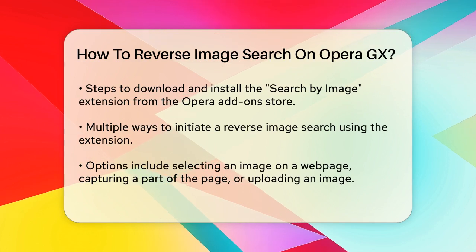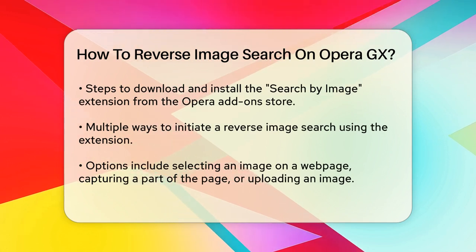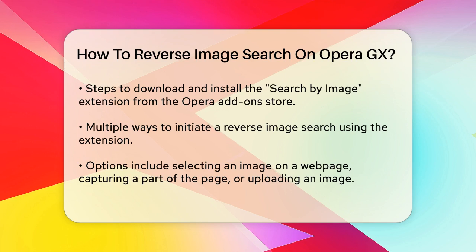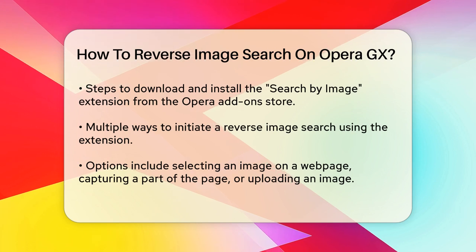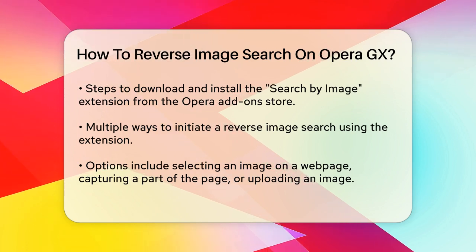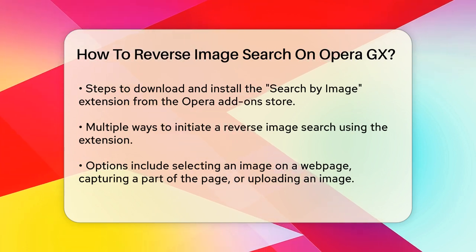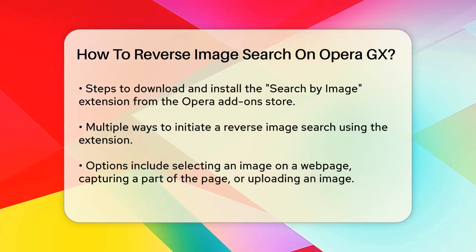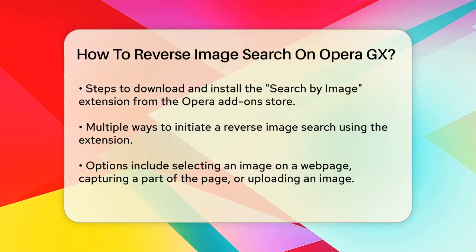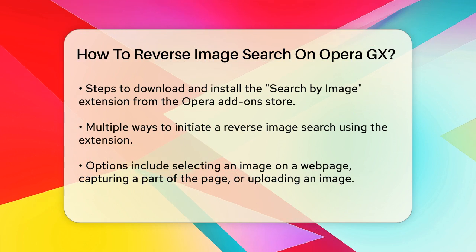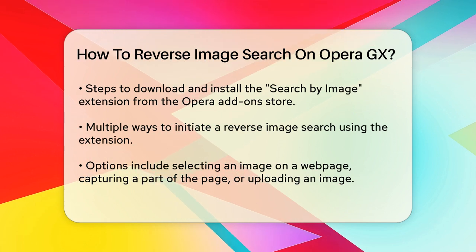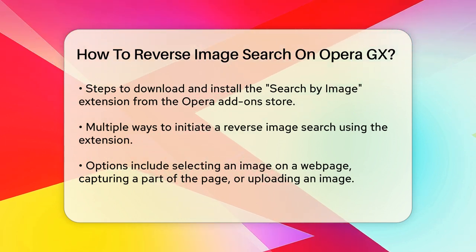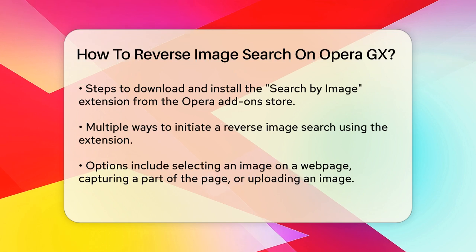However, there's an even better way to do reverse image searches on Opera GX. You can use the Search by Image extension, which is available for Opera GX. This extension makes it incredibly easy to perform reverse image searches. To get started, you need to download and install the Search by Image extension from the Opera add-on store.